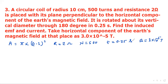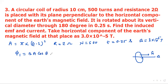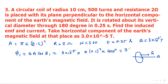When the coil is held perpendicular to the field, the normal to the plane makes angle 0 with B, so theta₁ = 0°. Thus φ₁ = BA cos 0° = 3 × 10⁻⁵ × π × (0.1)² × 1 = 3π × 10⁻⁷ Wb.